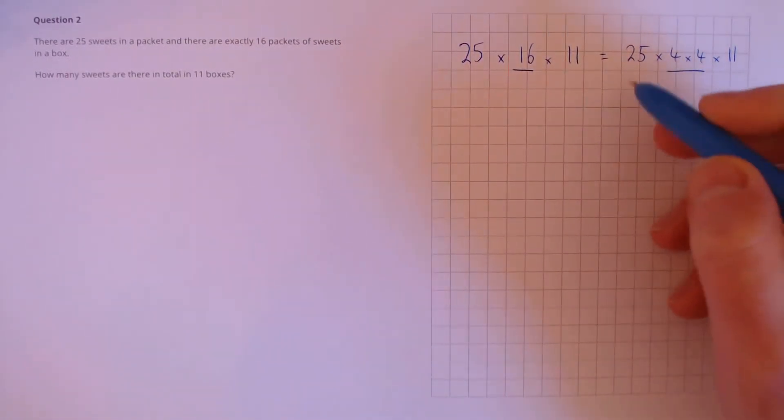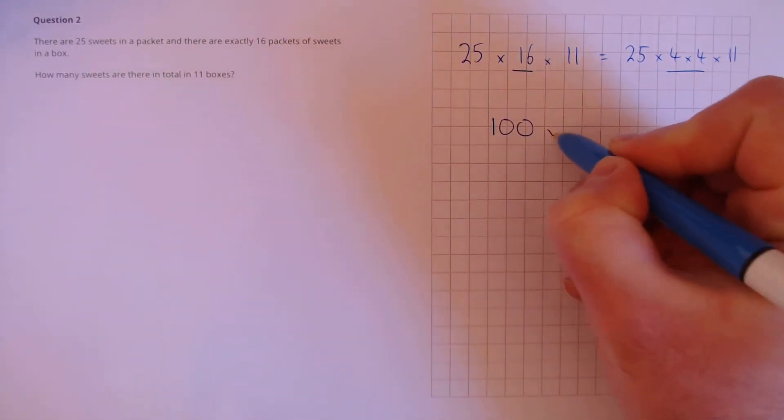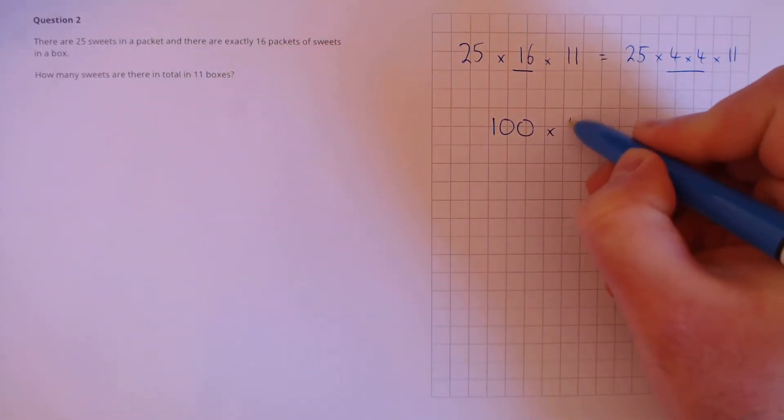Now let's do our multiplication in two parts. 25 times 4 is 100, and 4 times 11 is 44.